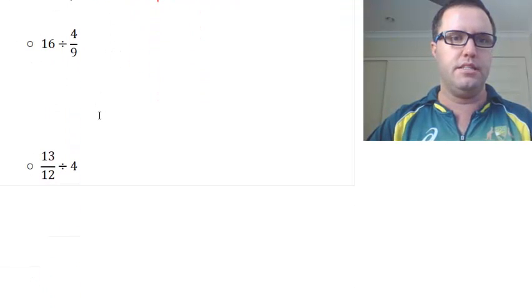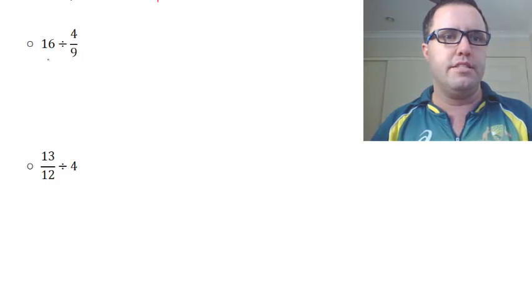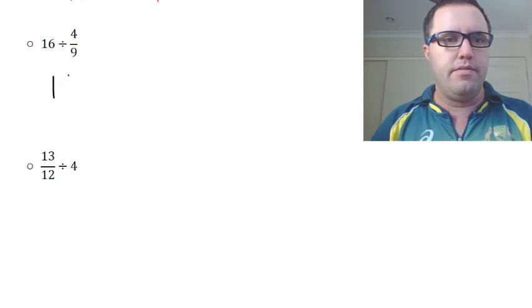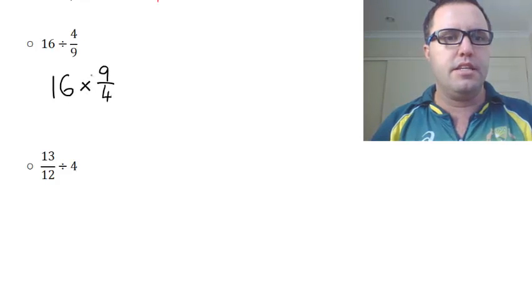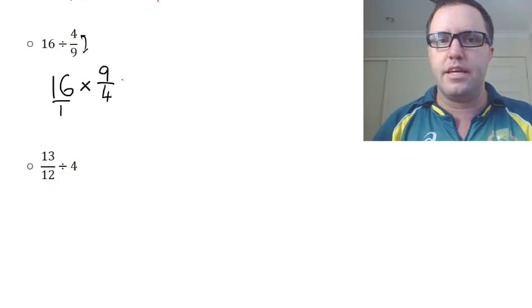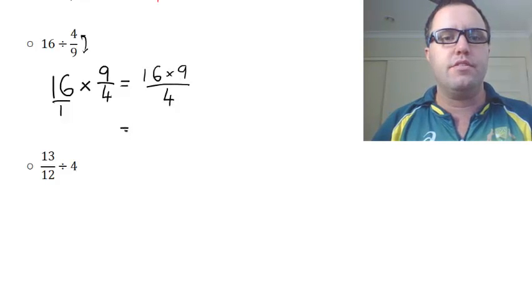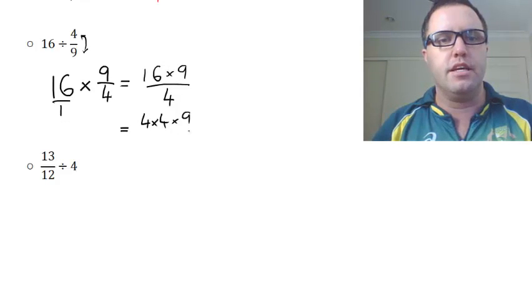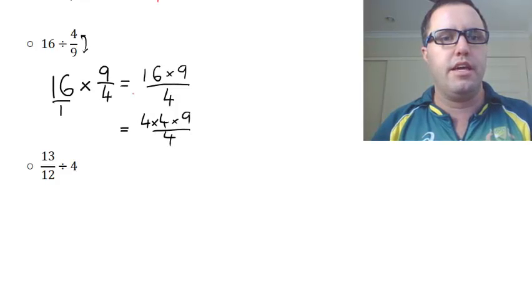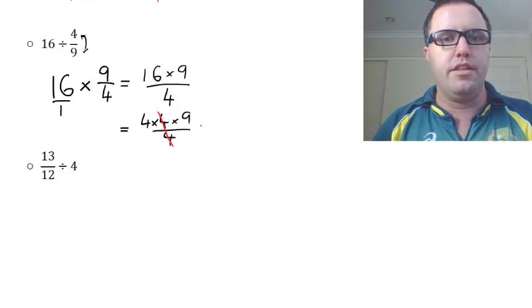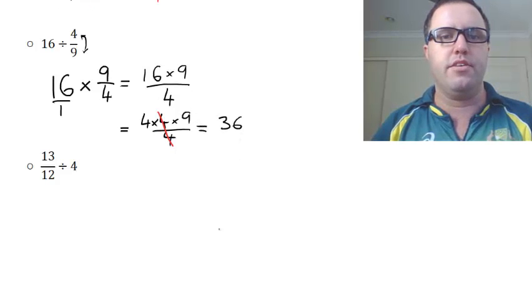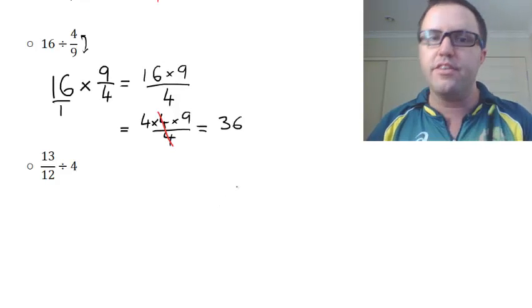All right, so we'll have a look at these ones here. So 16 divided by 4 over 9, same deal. We keep the 16 the same, we change it to multiplication, and we flip the divisor. 16 times 9 over 4, this is the one here that got flipped around. Now remember, 16 over 1 is the same as 16, so we have 16 times 9 over 4. Now, rather than carry all this out, sometimes it's handy to remember that 4 times 4 is 16, those two here are going to cancel out, and we are left with 4 times 9 is 36. There's 36 lots of 4 ninths in 16.